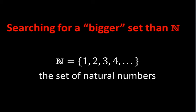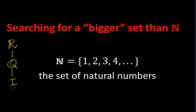In section 3.2, we've been searching for a set that might have a larger cardinality than the set of natural numbers. So let's review for a second what sets we have talked about. We know that the real numbers contain the rational numbers, which we call Q, the rationals, and those contain the integers, and then those contain the natural numbers.